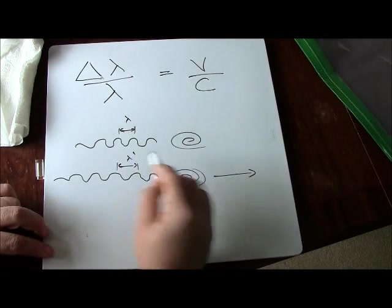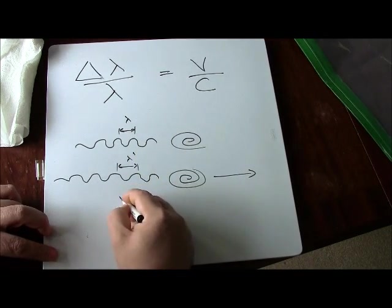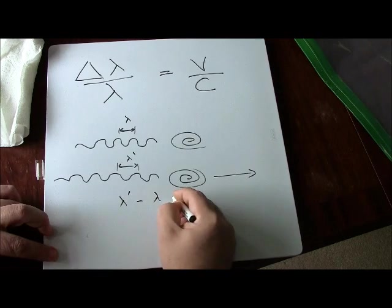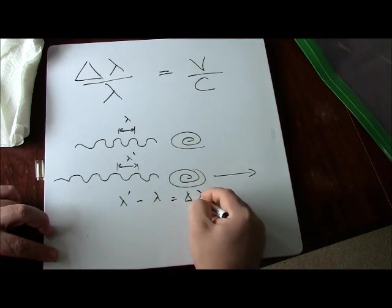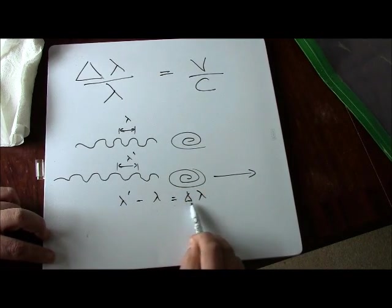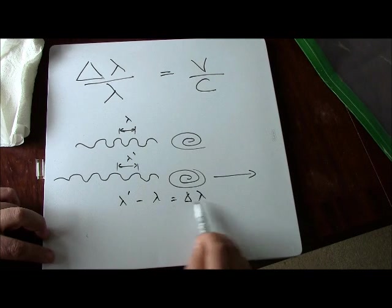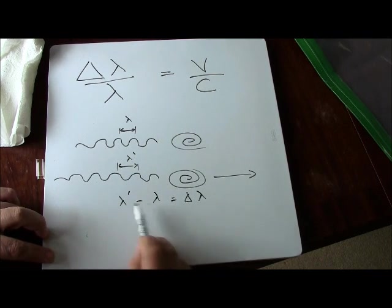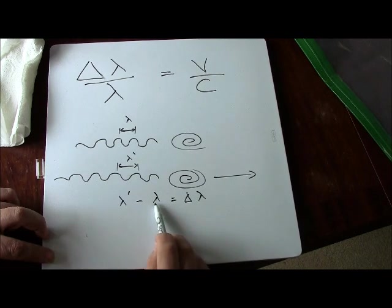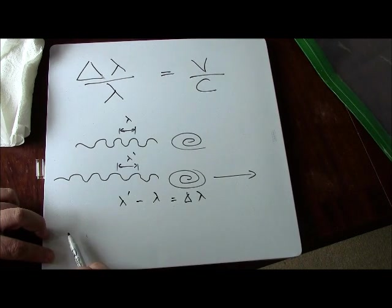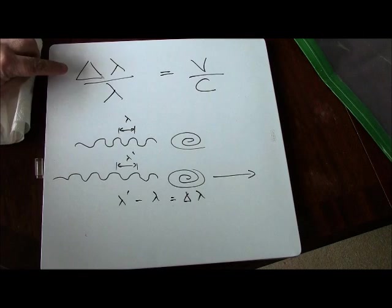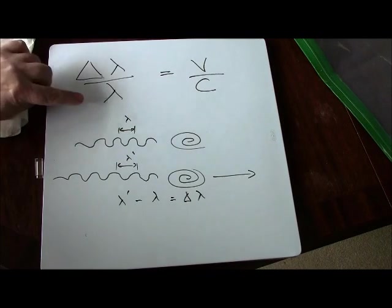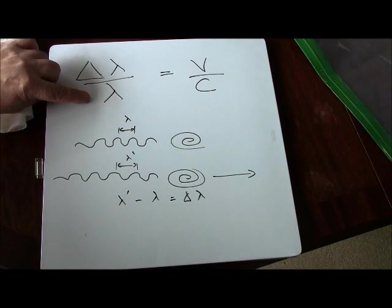Now the difference between them, the change in the wavelength, we will say is delta lambda. Delta we use to say the change in something. So the change in wavelength is delta lambda. That's the big wavelength minus the original wavelength. And in this equation here there's delta lambda there. This lambda here is the original wavelength.